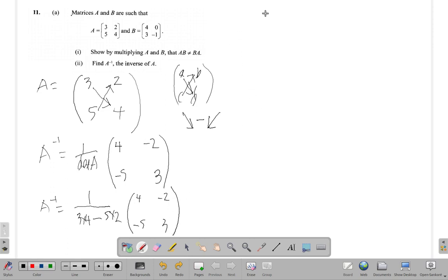And it's going to be four, negative two, negative five, three. So continuing over here, the inverse of A is one over... three times four is twelve, minus five times two is ten. So it's going to be twelve minus ten, which is two, one over two, times four, negative two, negative five, three.